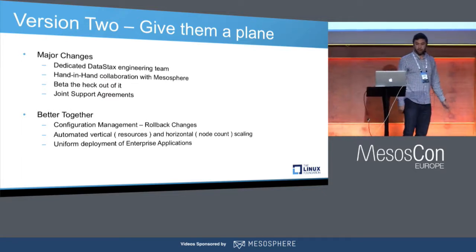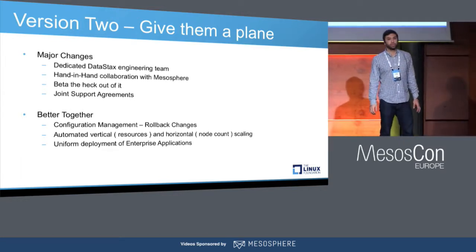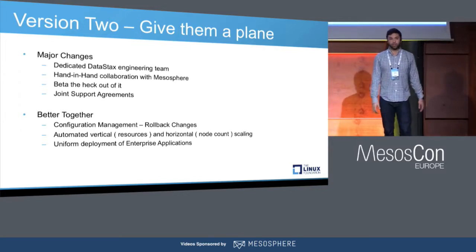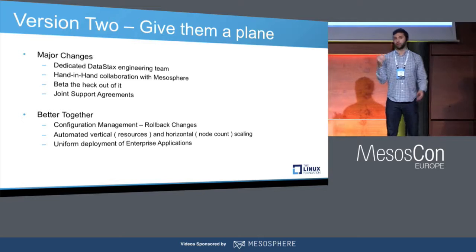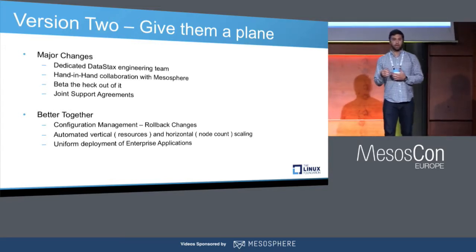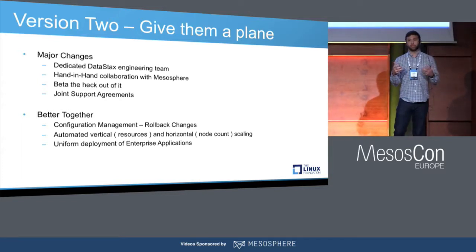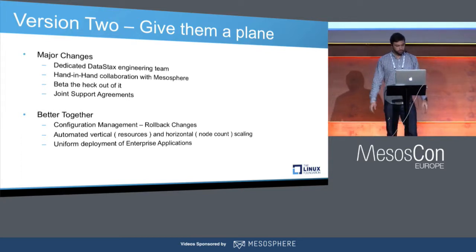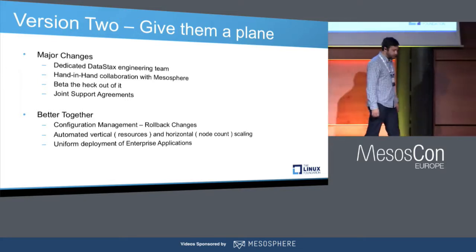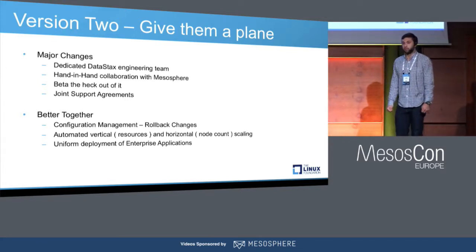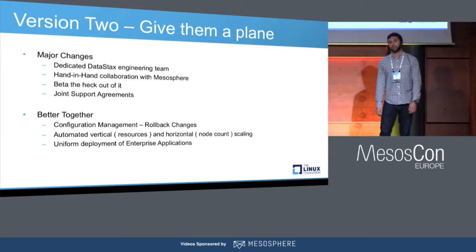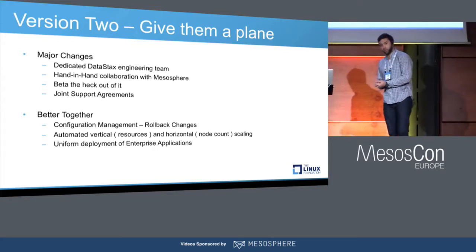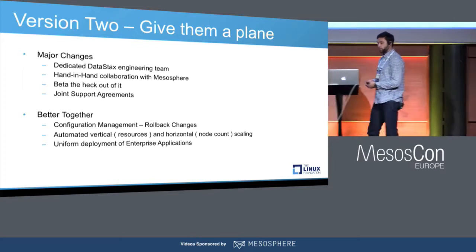Users of Cassandra and DSE are very used to horizontal scaling — if you need more throughput, you just add more nodes and it scales linearly. But DCOS also gives us the ability to scale vertically. In cases where you might be restricted on node count but nodes have more available resources, DCOS can allocate those for you, so now you can scale both vertically and horizontally. The other big advantage is uniform deployment of enterprise applications. We have customers using this for platform as a service and microservices, where deploying uniformly and efficiently with a click of a button in DCOS has been a real advantage.